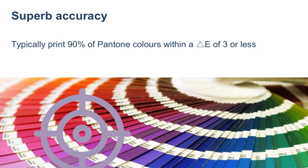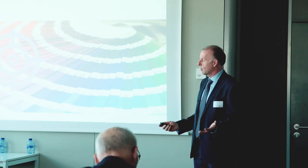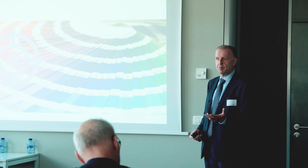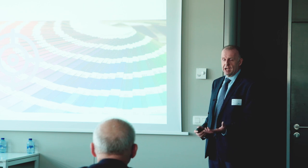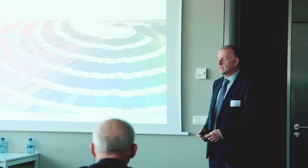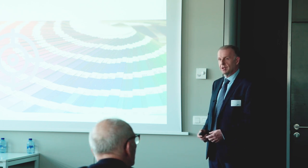In terms of the measurements we've quoted, typically 90% of the Pantone colours we can print within a delta E of three or less, and most are coming in well below that target. It depends on the standards you want to work to in terms of printing. The system will allow you to set what your standards are and to make these checks up front — is the accuracy I'm printing good enough for this particular client, for this particular piece of work? And again, this is all on a four-colour press.